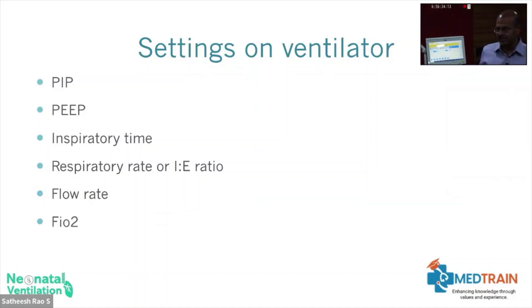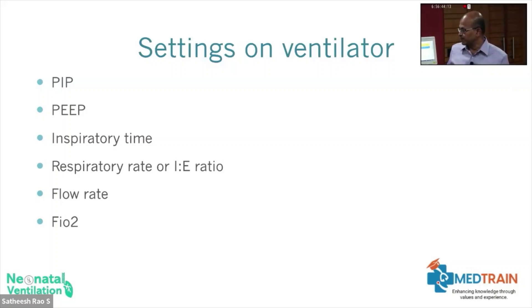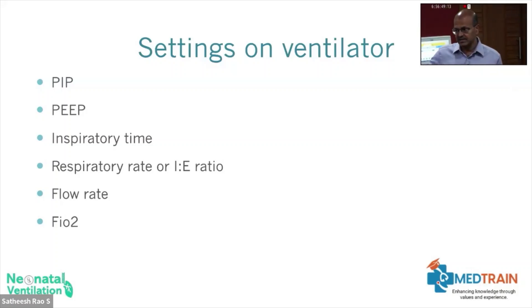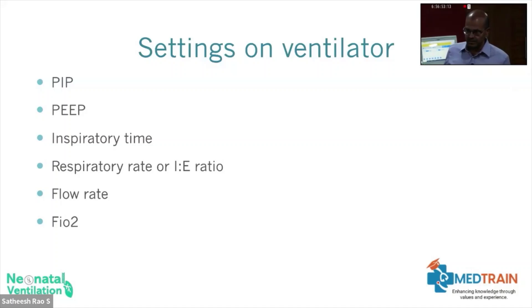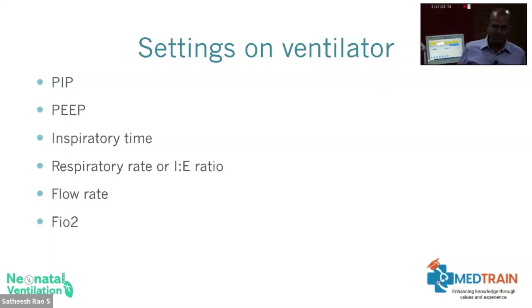All of you are familiar with these settings, but we will quickly discuss each one: peak inspiratory pressure (PIP), positive end-expiratory pressure (PEEP), inspiratory time, respiratory rate, IE ratio, flow rate, and FiO2. The flow rate is most of the time preset by the ventilator and you can adjust the slope. You adjust it only if you want to change the rate of rise — in PSV also you have that rate-of-rise setting.